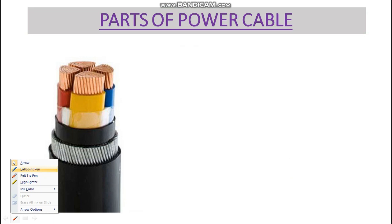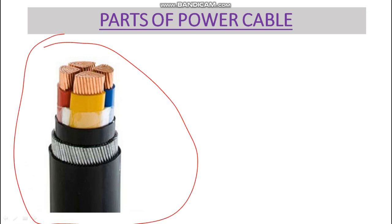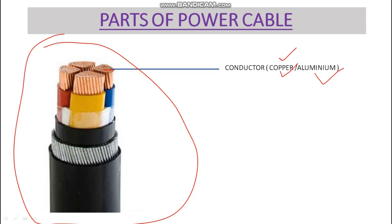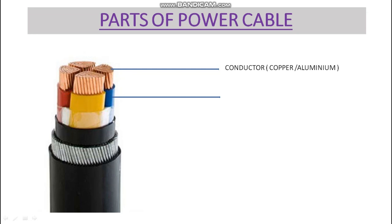This is the power cable. If you talk about its parts, here is the cross-section view. This part is the conductor — it can be made up of copper or aluminium. This is a four-core power cable. Above the conductor there is insulation, as you can see in red, yellow, blue, and black.